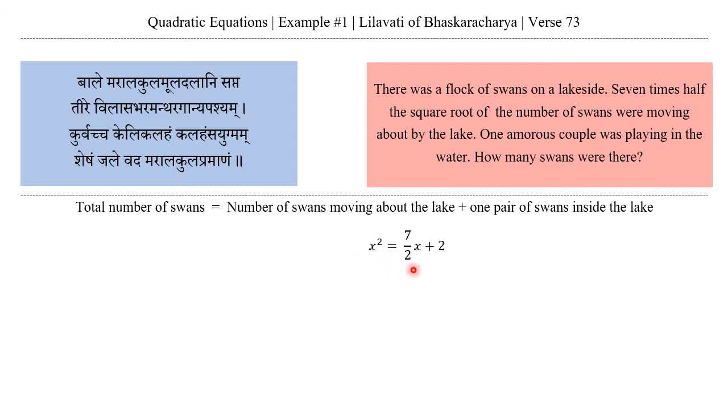Now let us move this 7 upon 2 x onto the left side of the equation. The first step of solving the quadratic equation is adding b square upon 4 to both sides of the equation. Let us do that.